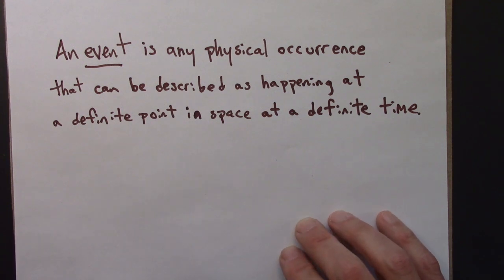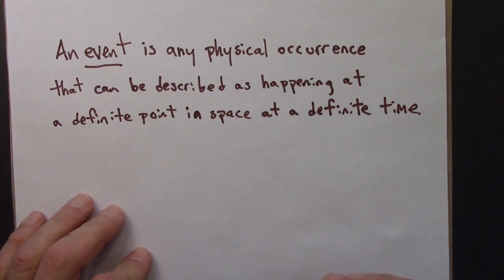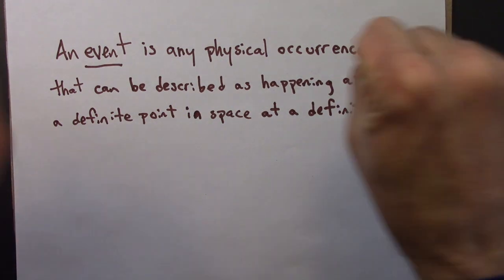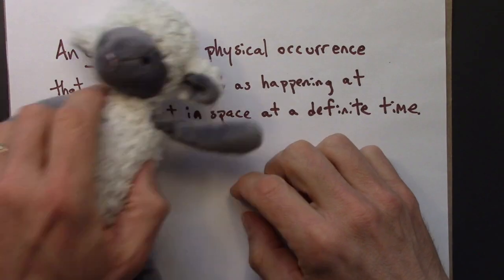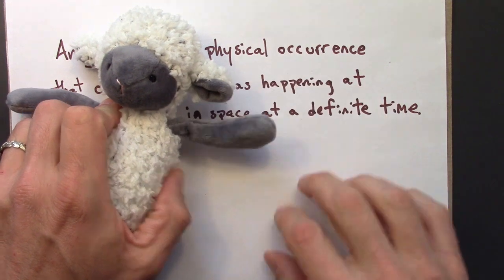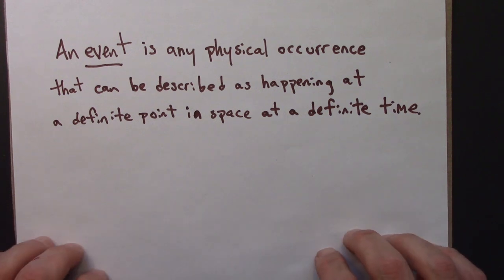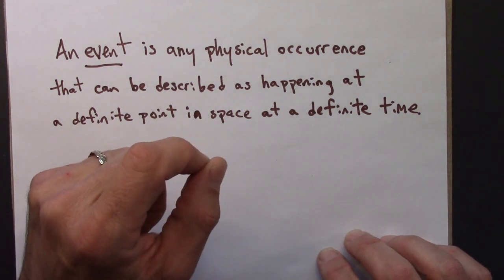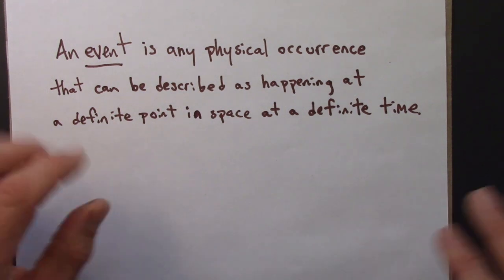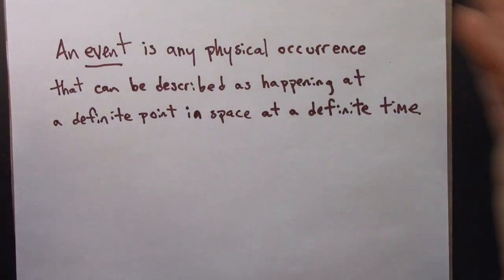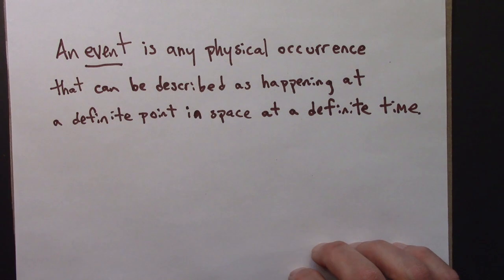So something that you can say when it happened and where it happened. So an example might be snapping my fingers, two things colliding, a hand waving. All of those could be described as an event. It's a thing that happens, a physical thing, that happens at a particular moment in time and at a particular moment in space. It's not spread out. It doesn't last for hours and hours. It's a particular moment.